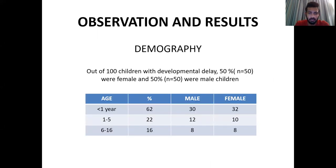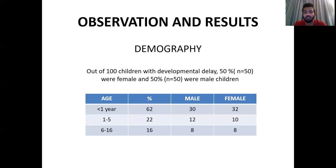On observation, coming to the demography: out of 100 children with developmental delay, 50 percent were male and 50 percent were female. Sixty-two percent were below one year of age, 22 percent were between one to five years, and 16 percent were between six and 16 years of age. In the under-one group, there were 30 males and 32 females. In the one-to-five age group, males were 12 and females were 10. In the six-to-16 age group, males and females were both eight.